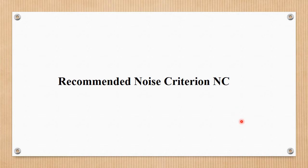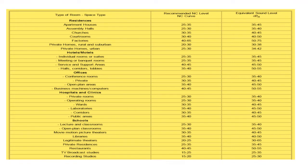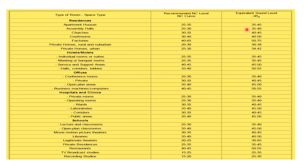Now let's talk about the recommended noise criteria. These are different factors — a column of room or space types and their corresponding decibel levels. For residences and apartments, the noise criteria is 25 to 35, while the decibels on the A-weighted scale is 35 to 45. For assembly halls, the noise criteria level is 25 to 30. These different categories include Residences, Hotels, Offices, Hospitals and Clinics, Schools, etc. These are all recommended criteria curves for different indoor sources with different noise criteria values.